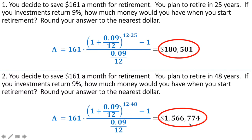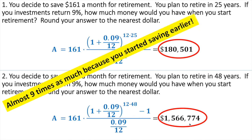That's the power of compound interest. This is why when we start saving for retirement, we want to start saving as soon as possible. It sounds weird, but even in your teens — if you can save in your teens, you're very easily going to become a millionaire. Almost nine times as much because you started saving earlier. So when you're doing any sort of investments, the sooner you can get the money in there and just let it sit, it will grow and compound.